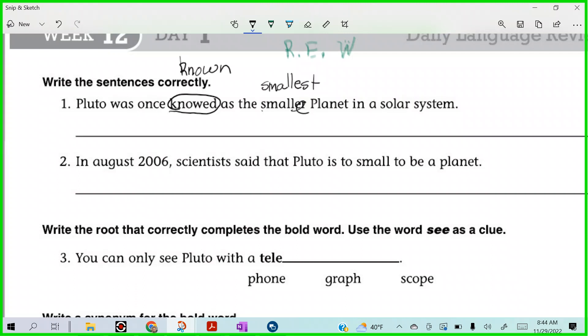That is correct. So, Pluto was once known as the smallest planet in a solar system. That's not right, Georgia, is it? What should it be? We could go an hour, or could we say... Did you say the? Yeah, the. I like the better. Alright, so Pluto was once known as the smallest planet in the solar system.